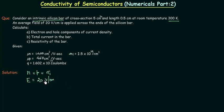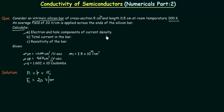Also given in the problem are the values of mobility of electrons mu_n, mobility of holes mu_p, and the charge of one electron, 1.602 x 10 to the power minus 19 coulombs. We have to calculate: first, the electron and hole components of current density. Let's start with the solution.